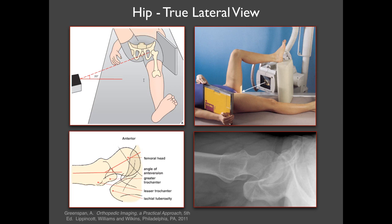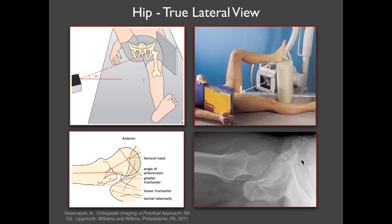Another very important view is the true lateral view. This is used when the patient cannot put the leg into a frog leg position — typically because they have a fracture or suspected fracture, or they have a recent prosthesis and you don't want to risk dislocating it. The opposite leg is elevated, and the affected leg lays straight supine. You get a view showing the femoral head, acetabulum, femoral neck, and trochanters. This is a very important view for detecting fractures in the acute setting.